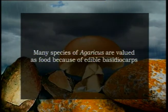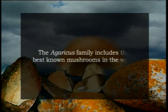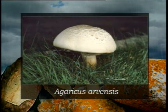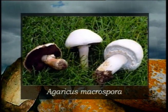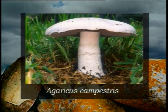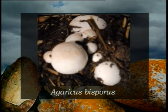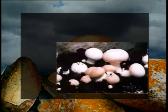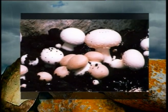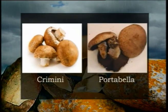The genus Agaricus consists of both edible and poisonous species. Many species of this genus are prized as food because of their edible basidiocarps. The most edible species are Agaricus campestris, the field mushroom, and Agaricus bisporus, the cultivated mushroom. The white buttons generally sold as mushrooms are a cultivated variety of Agaricus bisporus. The crimini and portabella mushrooms are also cultivars of this species.